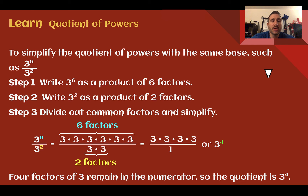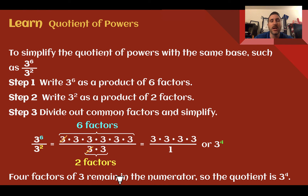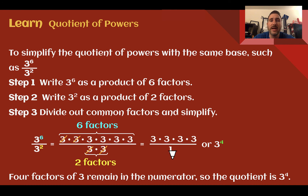Let's learn. Quotient of powers. To simplify the quotient of powers with the same base, such as 3 to the sixth divided by 3 squared, we write out 3 six times on top and 3 two times on the bottom, then cancel out any factors that make 1. 3 divided by 3 makes 1, and again 3 divided by 3 makes 1 — taking one from the top and one from the bottom each time. Once all the bottom factors are cancelled, I have 4 left on top: 3 times 3 times 3 times 3, which is 3 to the fourth.